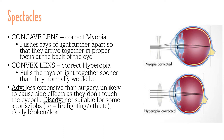A concave lens is used to correct short-sightedness (myopia). A short-sighted person's focus falls before the back of the eyeball; the concave lens pushes the rays of light further apart so that they arrive together in proper focus at the back of the eye. For hyperopia, a convex lens is used to correct the disorder. As the focal point falls behind the retina, light passing through a convex lens is bent so the focal point is corrected onto the retina.